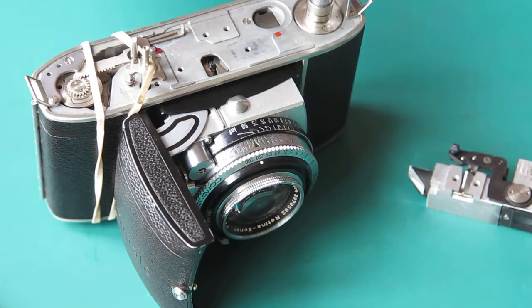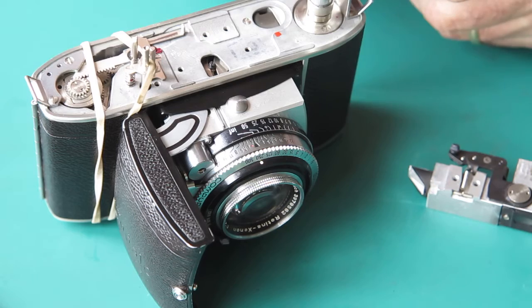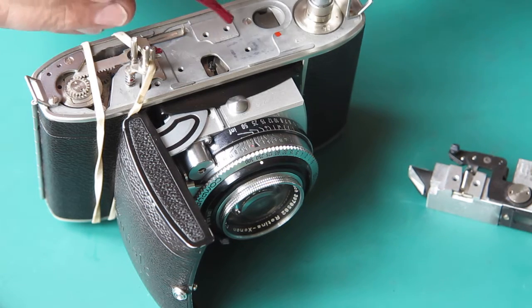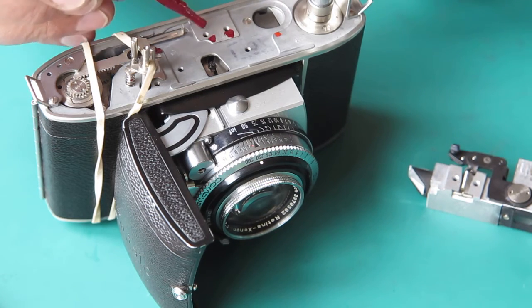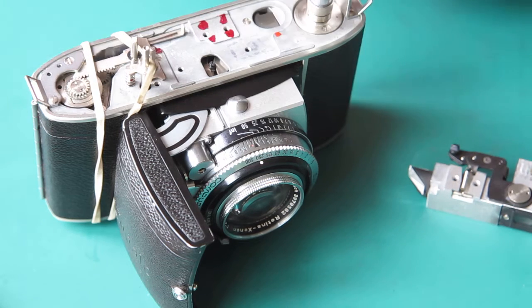I'm going to put a couple of spots of lacquer on the body where the rangefinder sits, so that once the screws are tight it has no tendency to shift even if the camera receives a thump.